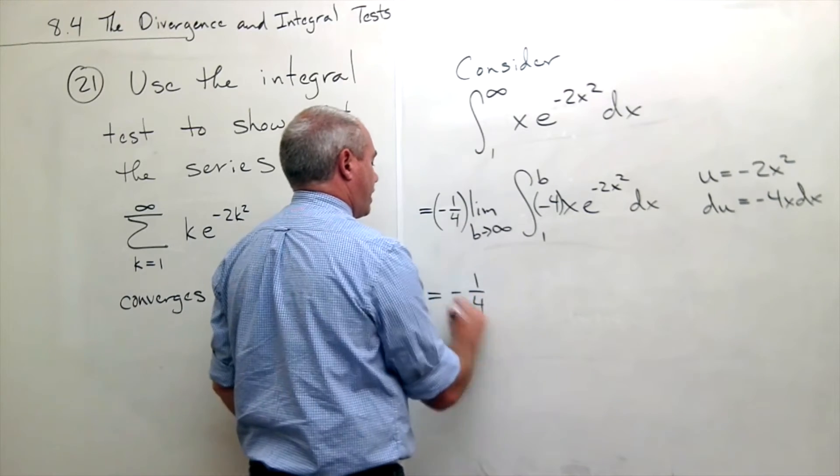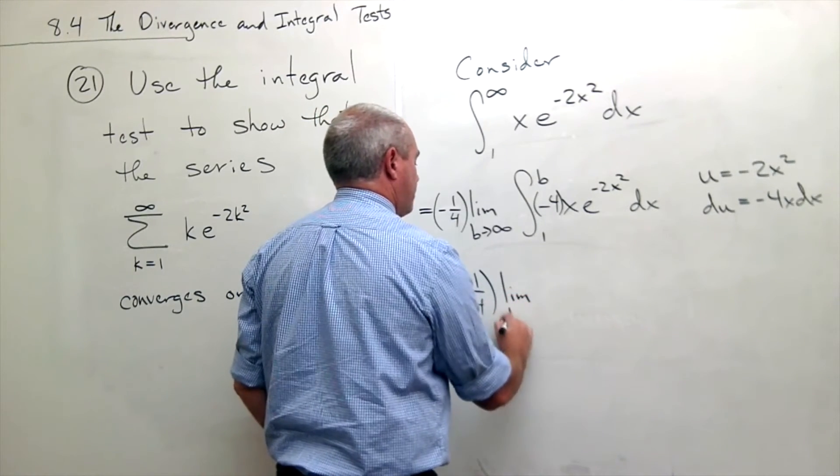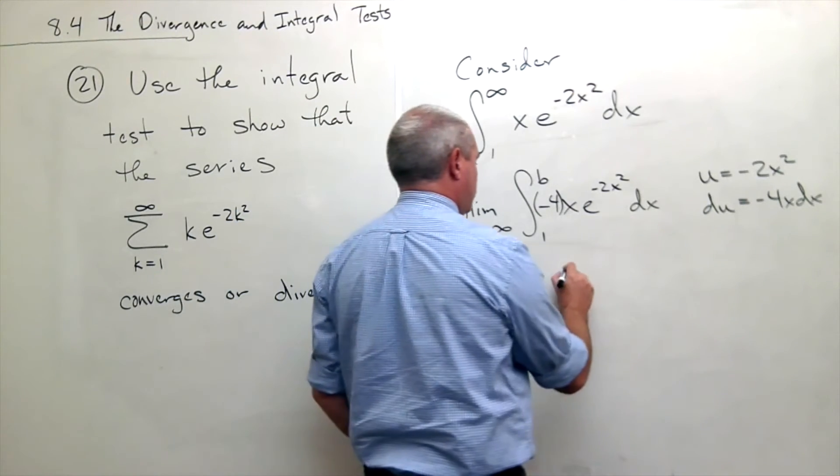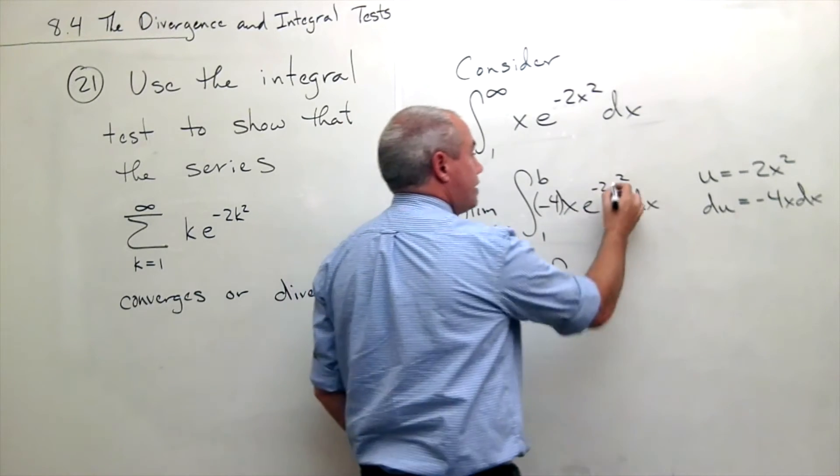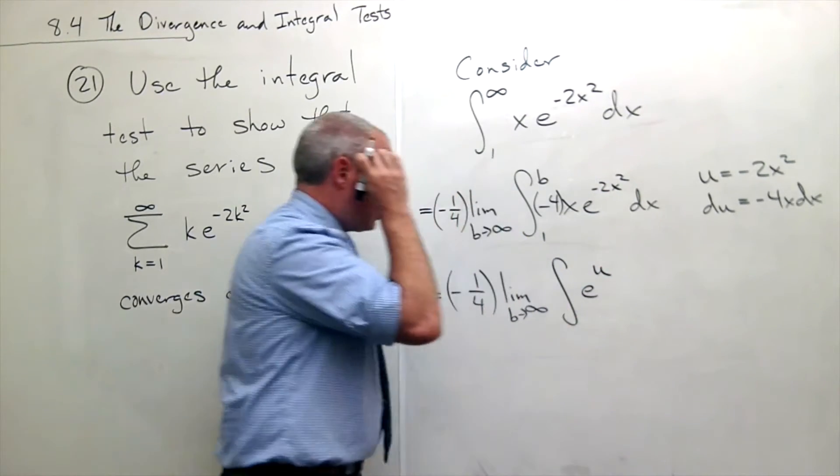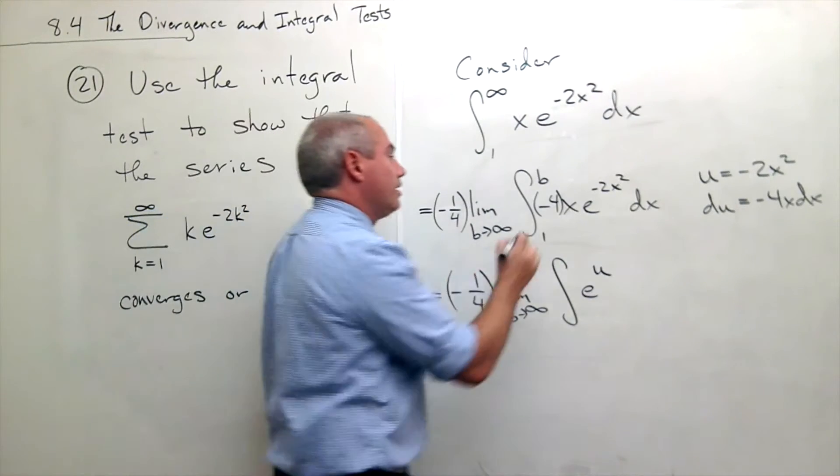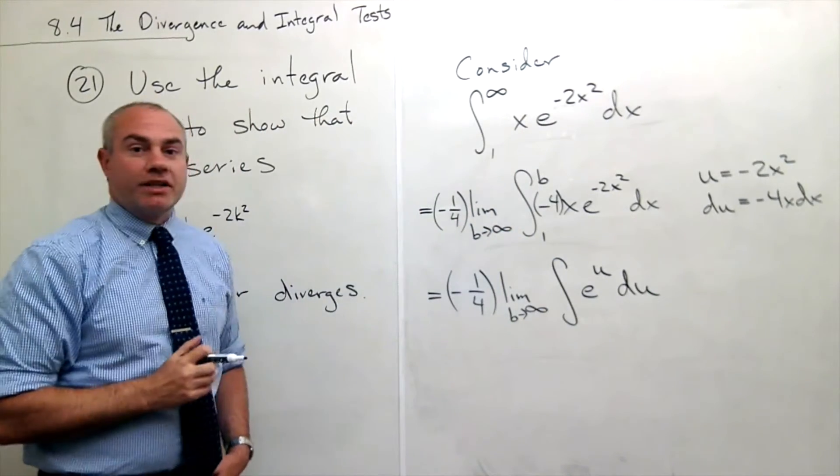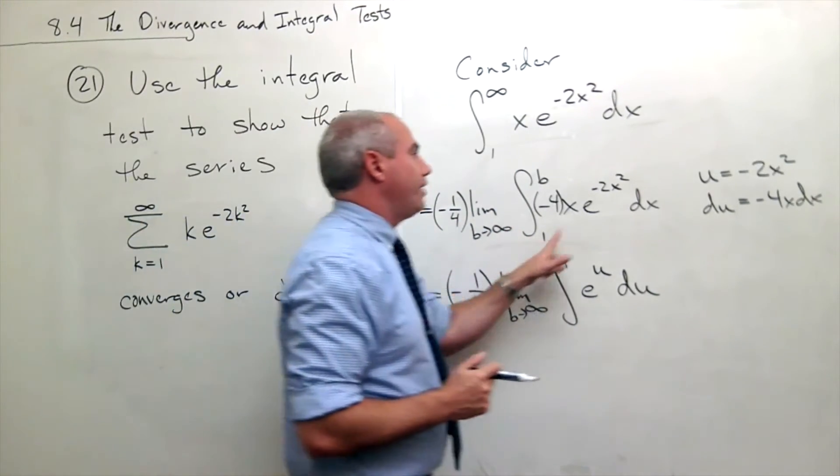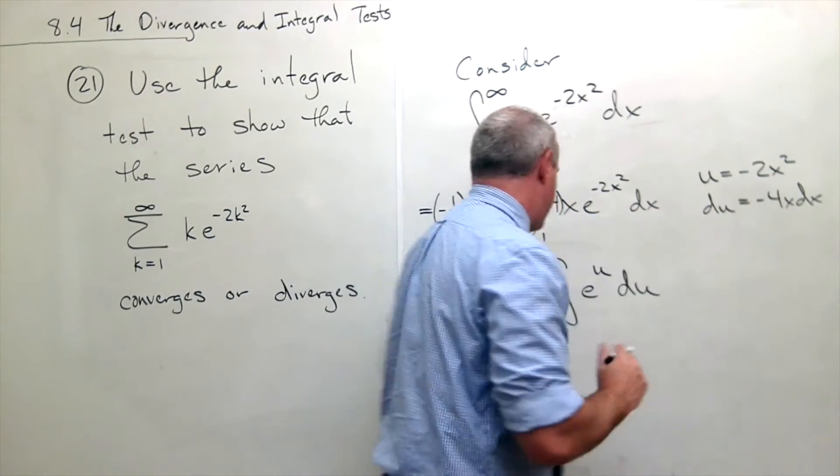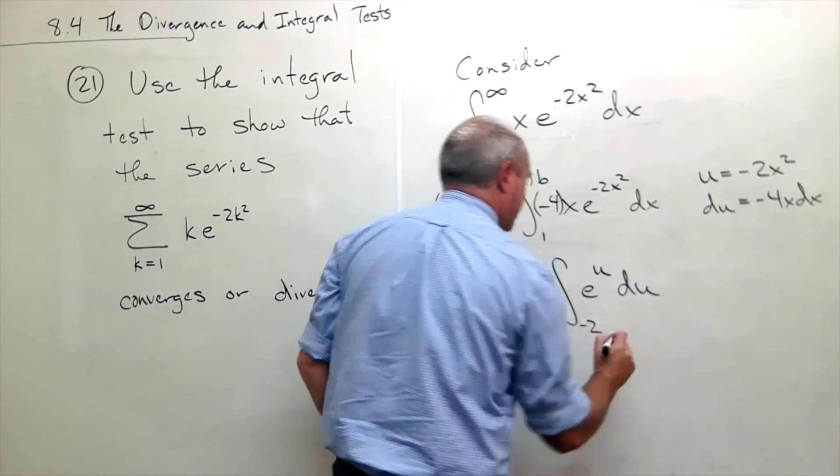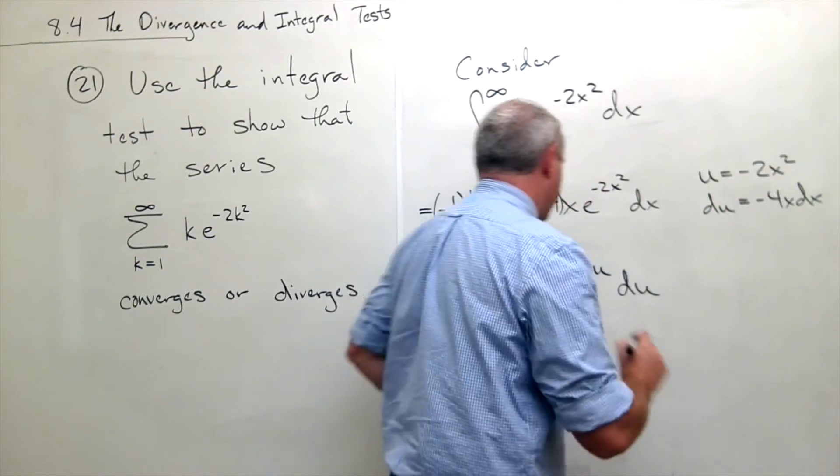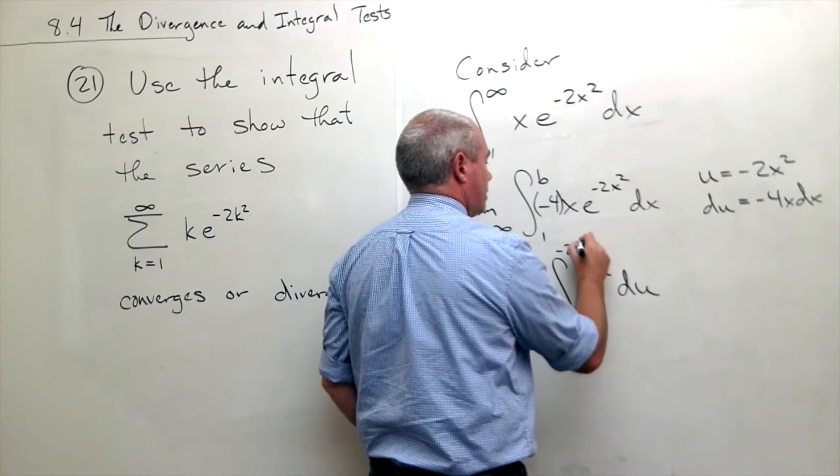I still have a minus 1 fourth sitting out front. I have the limit as b goes to infinity of the integral of e to the u, and then the negative 4x dx is my du. Now I can change my limits of integration. If I plug in 1 for x I get minus 2. And if I plug in b for x I get negative 2b squared.